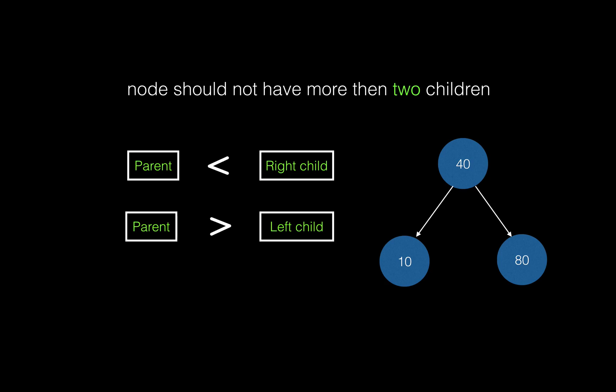It's really important to understand three rules before we move on to binary search tree insertion. The first rule: a parent should not have more than two children — if it does, it's not a binary tree. The second rule: the value of a parent is always greater than the value of its left child.